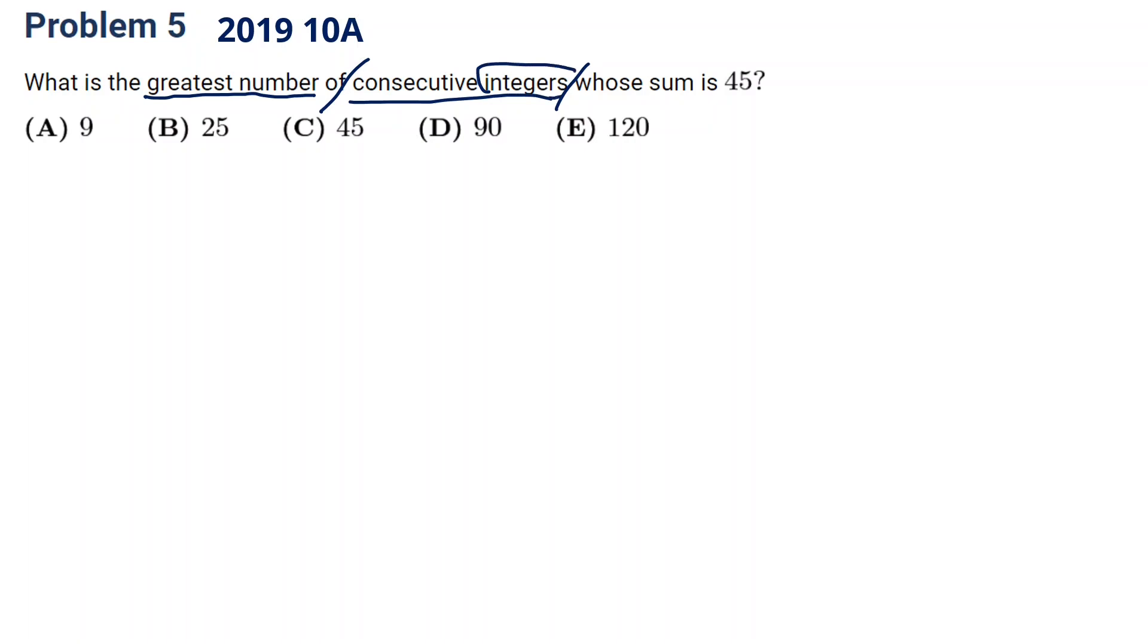It didn't say positive or negative. So the number could be negative. So the easiest way we know 45 numbers should work because 45 divided by 45 is 1. It's like the middle number is 1.